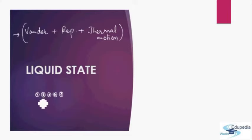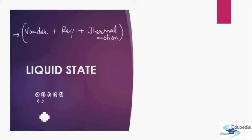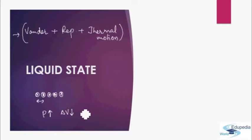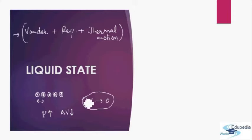Since the molecules are so close, repulsive forces are now acting between the molecules, and as a result it becomes very difficult to compress liquids further. The repulsive forces keep on increasing as you try to bring the molecules closer. Hence, even with high application of pressure, the change in volume delta V is very very low — in fact, in your syllabus you will assume that delta V is nearly tending to zero, that is, liquids are incompressible.